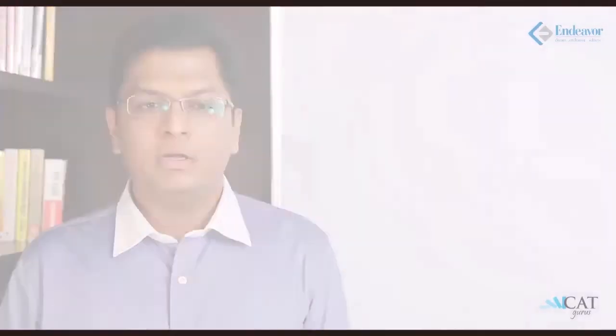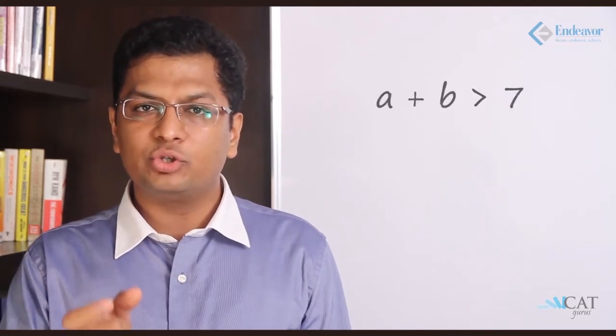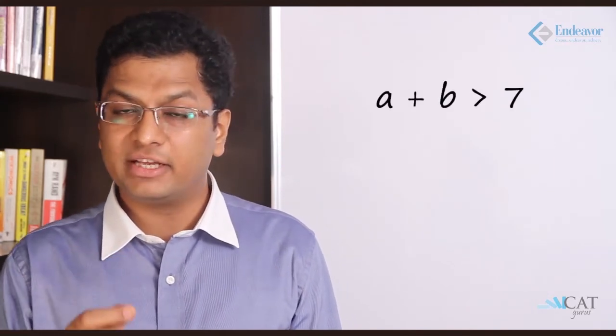Let us look at a problem. If the perimeter of a triangle is 14 and the sides are all integers, then how many different triangles are possible? The basic rule is: any two sides of a triangle must sum to more than the third side. Since the total is 14, if the sum of two sides is less than 7, the third side would be more than 7, violating the rule. So any two sides must total more than 7 — they cannot be equal to 7.